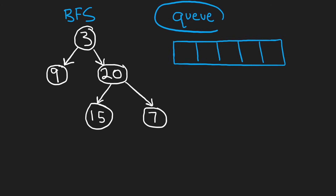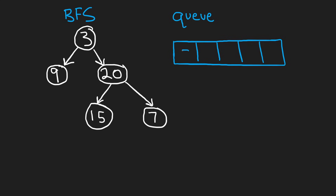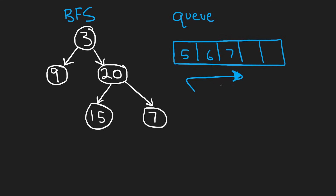You need a queue data structure because we're going to be inserting elements to the right — adding elements to the right portion and popping elements from the left portion. So basically we're following first-in first-out. The first element that gets inserted is going to be the first element that gets removed. So that's the order we're going to be doing things in.